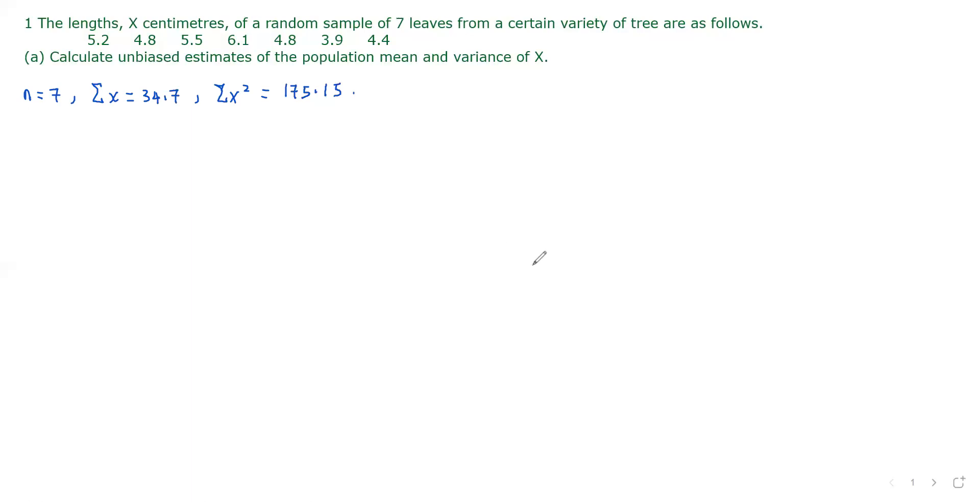The unbiased estimate of the population mean is given by the sum of x over 7, and this is 34.7 divided by 7, which is 4.96 to three significant figures.